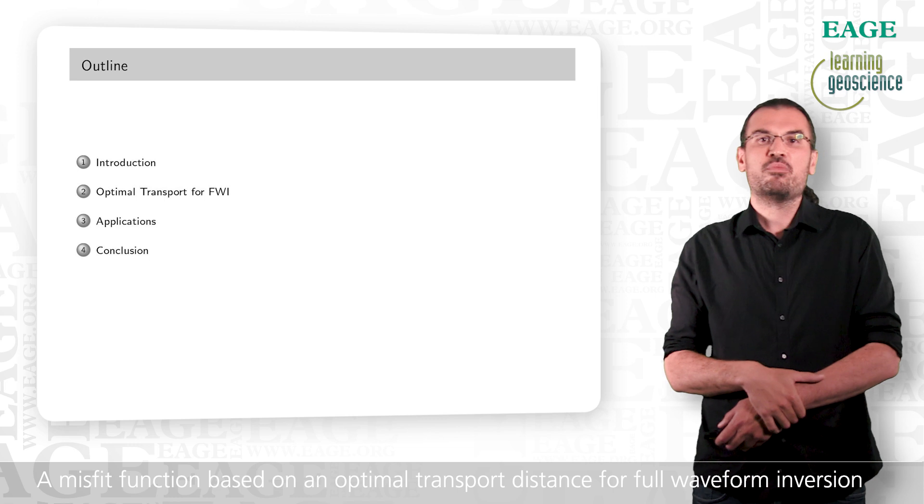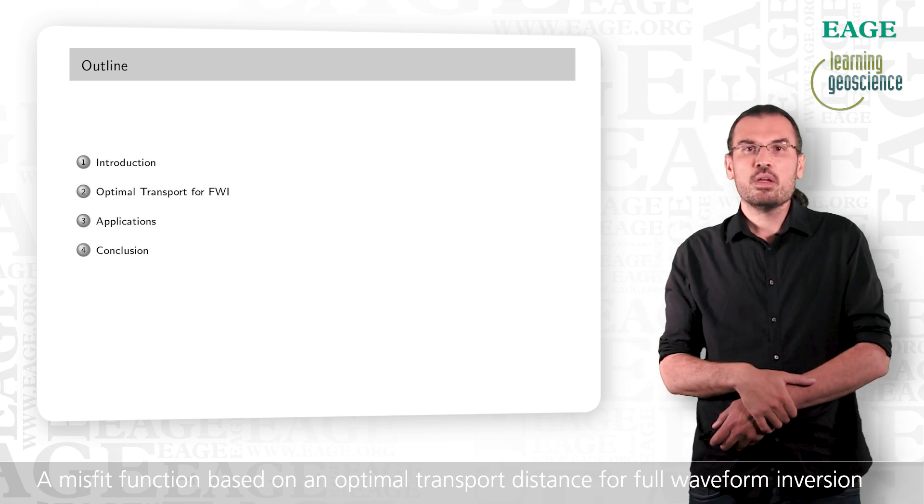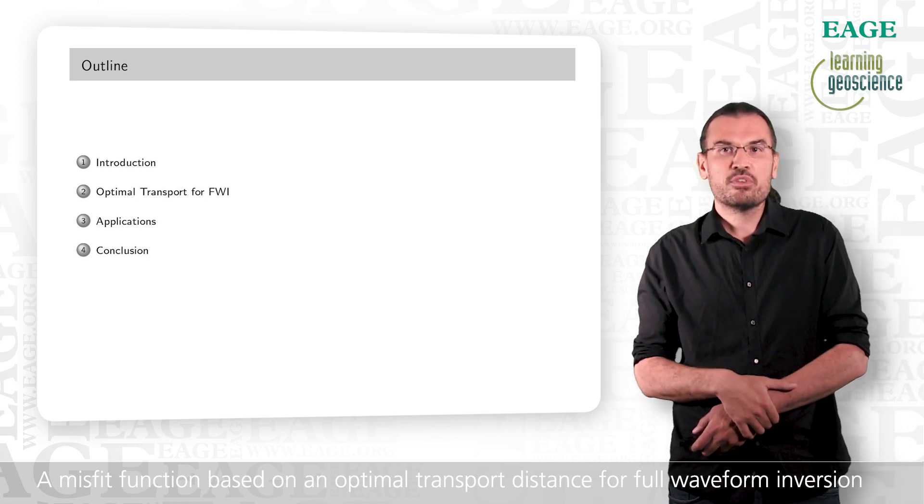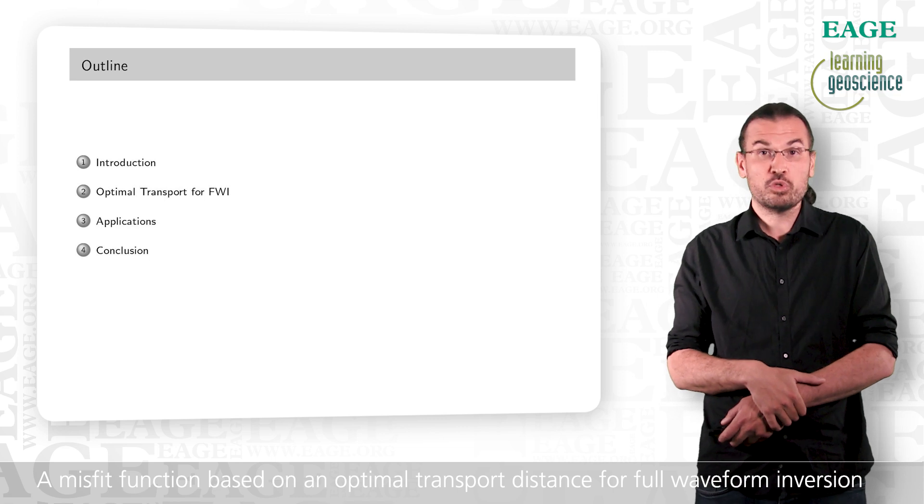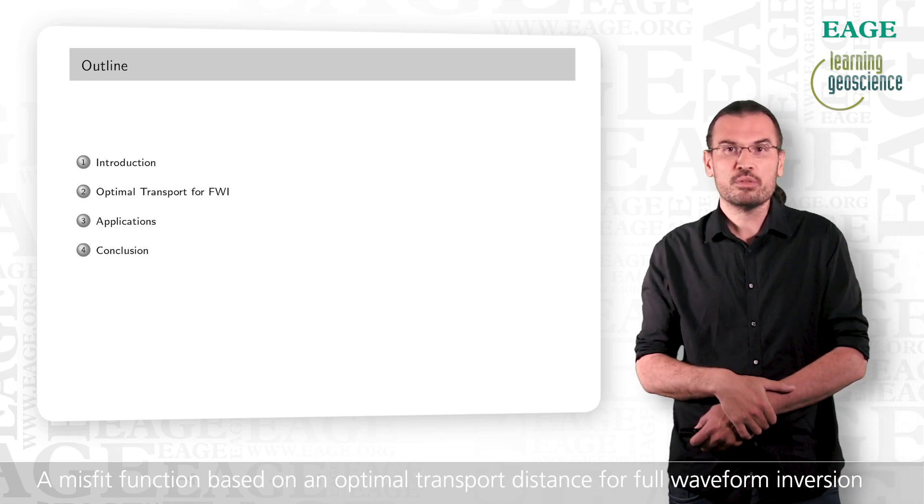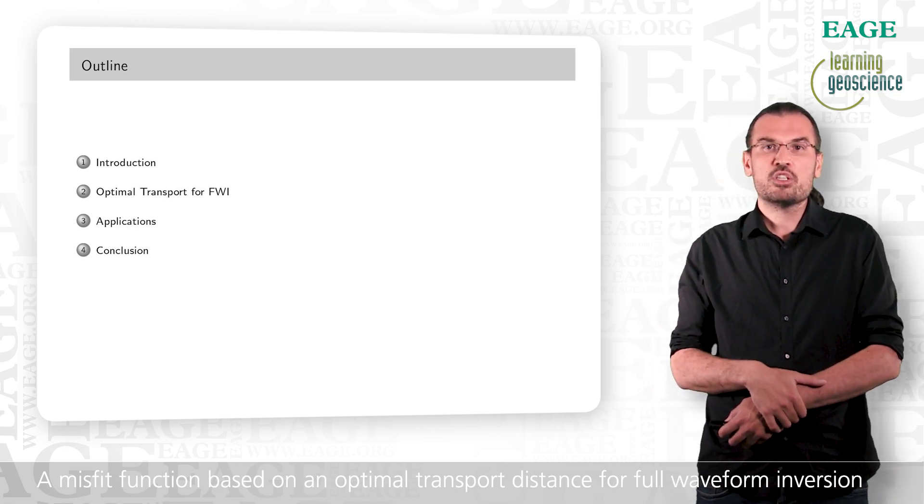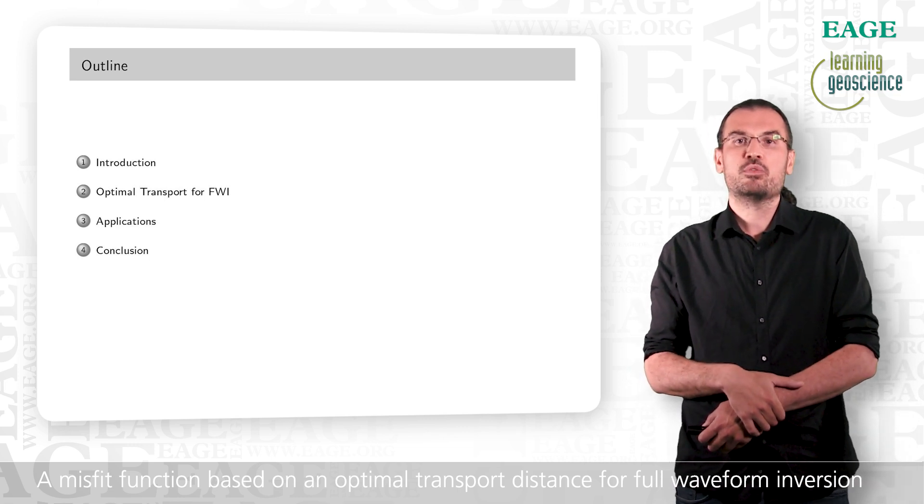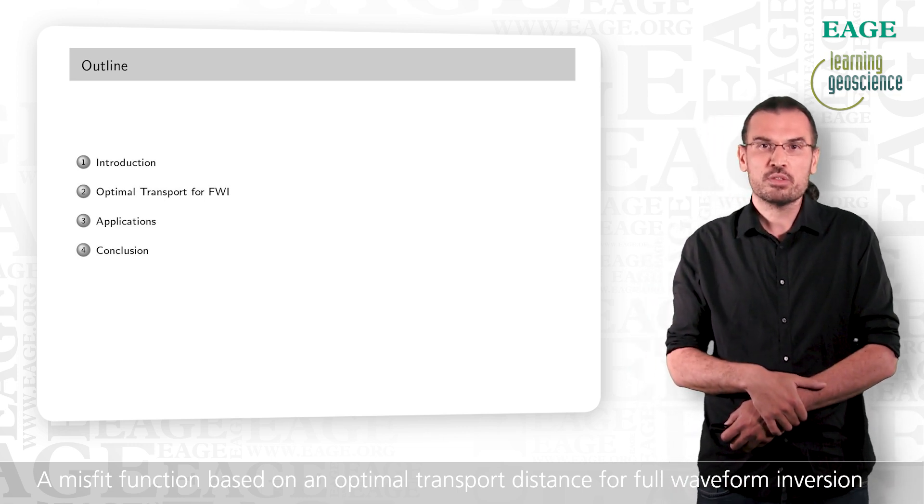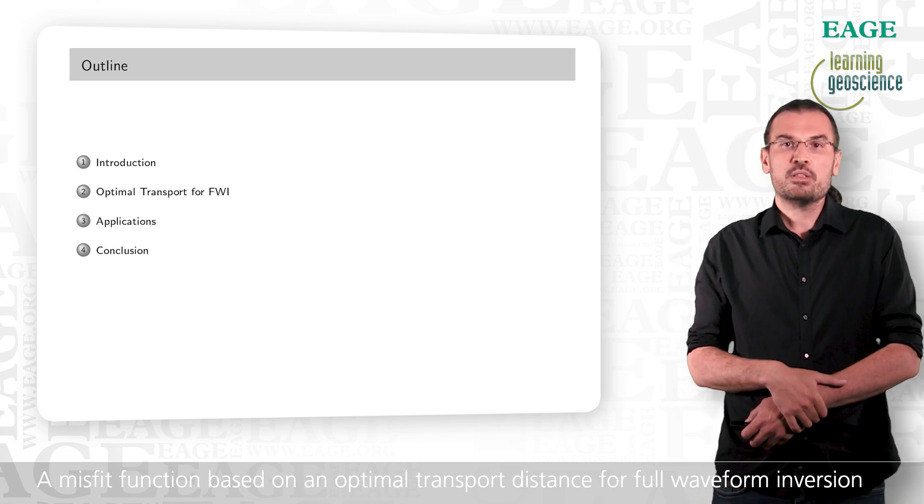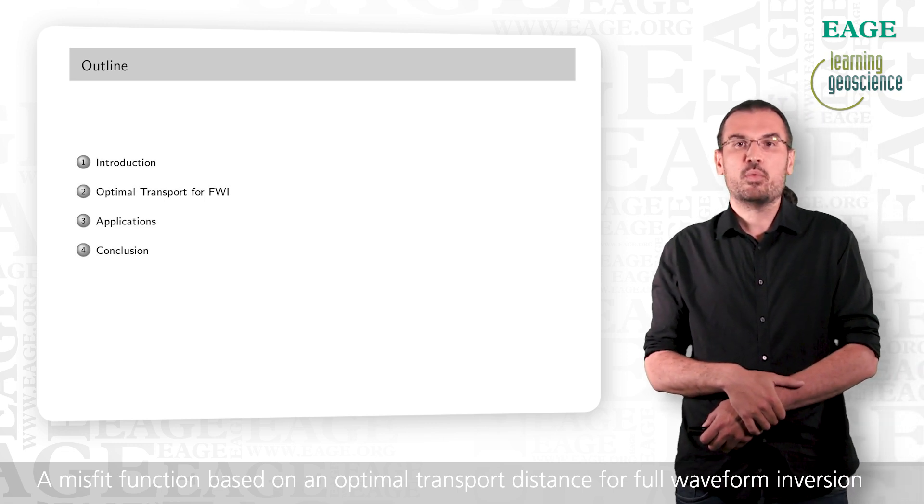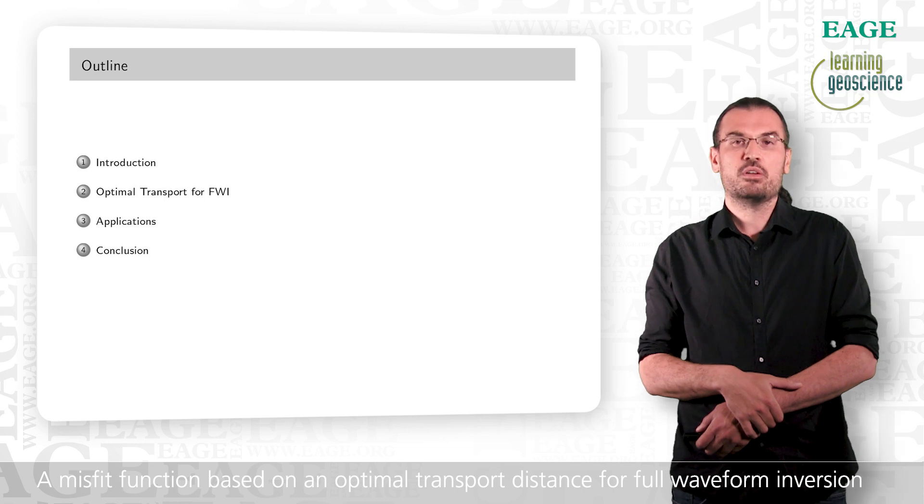This is the outline of my presentation. I will give basic concepts first on optimal transport to motivate its use for full waveform inversion. Then I will present the strategy we have designed for a first implementation of an optimal transport distance for full waveform inversion. This will be illustrated by two applications and I will end with conclusions and perspectives on this work.